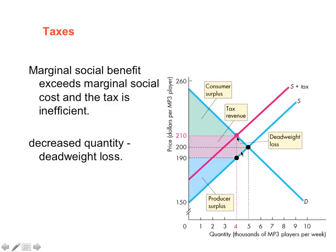The deadweight loss arises because of underproduction of the good — in this case, MP3 players. At this level of output, the demand is above the supply function, meaning the value attached to this output — the marginal benefit — is higher than the cost of producing the good. Because marginal benefit exceeds marginal cost in this region, there is a net social loss that accrues to no one and disappears due to the underproduction caused by the tax.